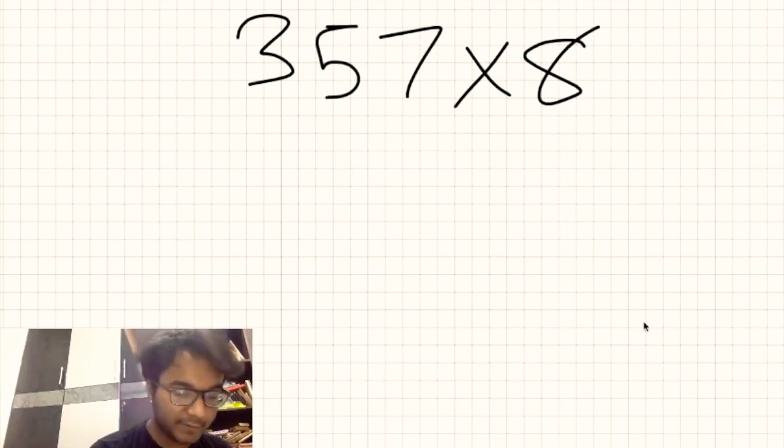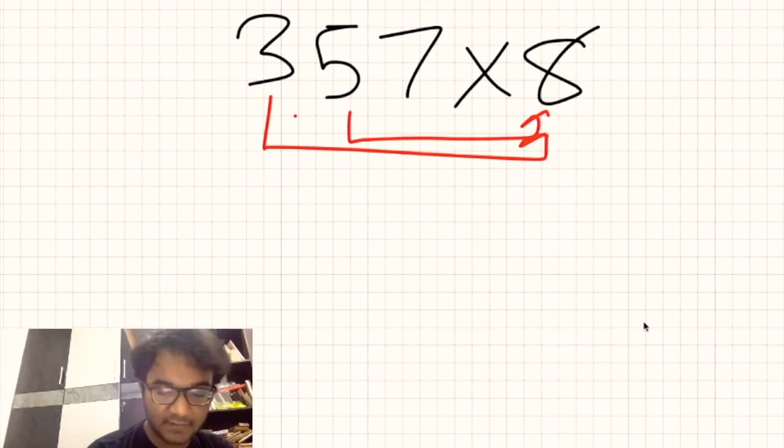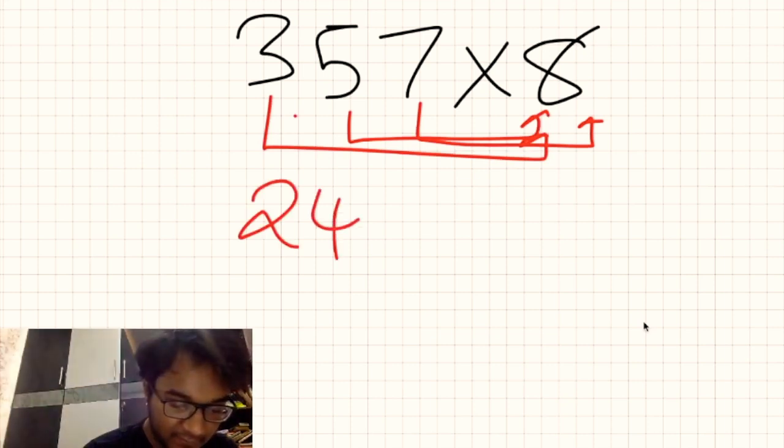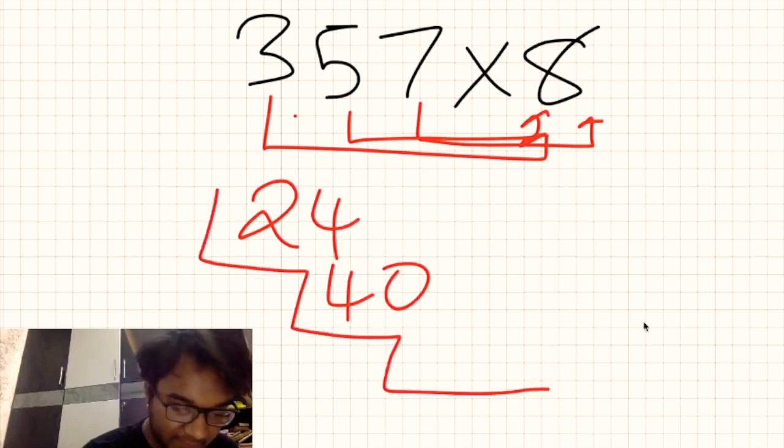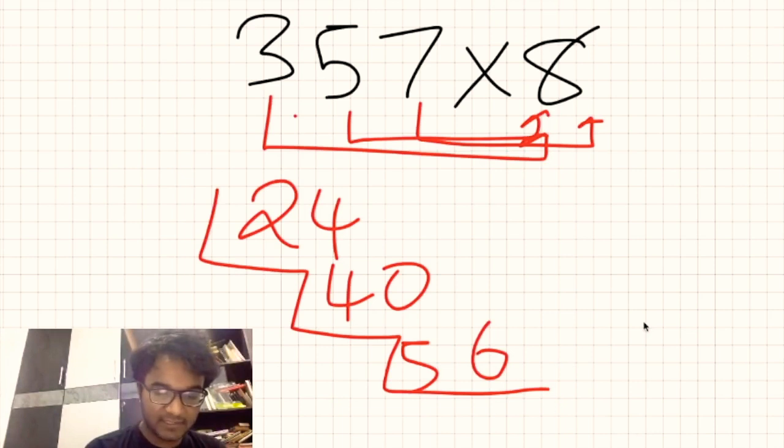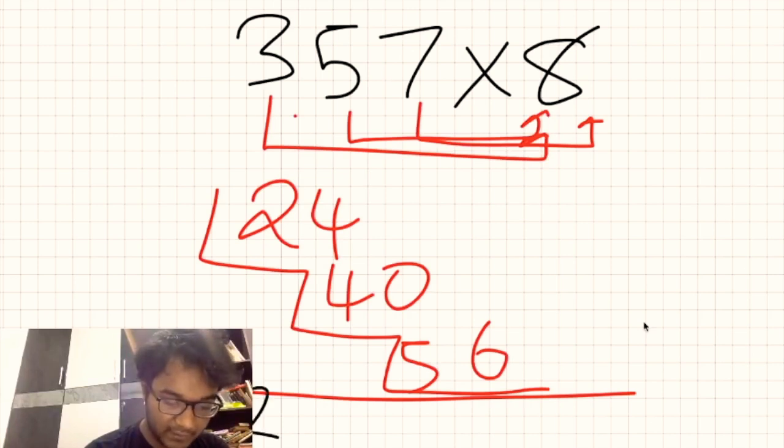So 357 times 8. What is our first step? Our first step is going to be 8 times 3. The second step is going to be 8 times 5 and the third step is going to be 7 times 8. Now let me write the results down. 8 times 3 is 24, 8 times 5 is 40 with one shift and the other shift which we have 8 times 7 is 56. Now what do we have to do? We just have to add these things up. We get 2856.